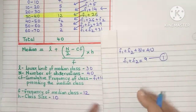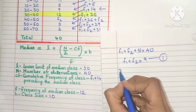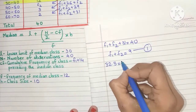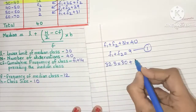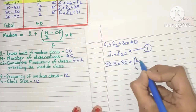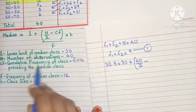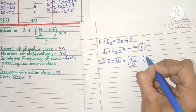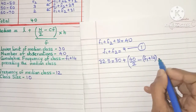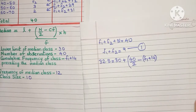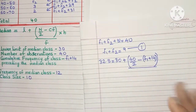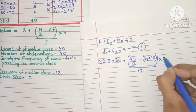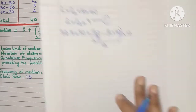Let's substitute into the median formula. Median equals 32.5, so: 32.5 = 30 + (40/2 − (f1 + 14)) / 12 × 10. Because 30 is separate from the entire term, bring it to the other side: 32.5 − 30 = (20 − f1 − 14) / 12 × 10. This gives 2.5 = (6 − f1) / 12 × 10. Remember to write f1 + 14 in brackets so your calculations are correct.